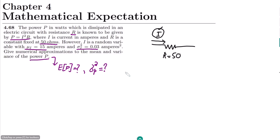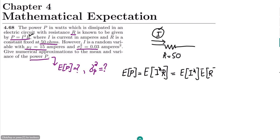We know that in order to find the expected value of P, we have to find the expected value of I²R, which is the formula already given. Since R is a constant term equal to 50, it will be a multiplicative factor, and the only thing remaining will be the expected value of I². Let me call this equation A.